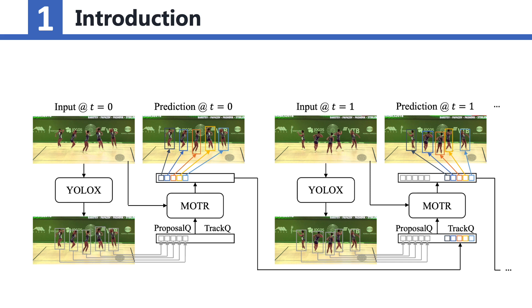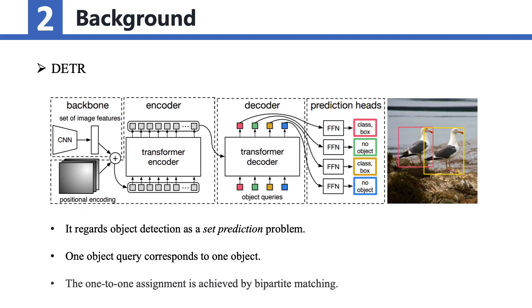The track queries are transferred from the previous frame and used to predict the bounding boxes for tracked objects. The concatenation of proposal queries and track queries as well as the image features are input to MOTR to generate the predictions frame-by-frame.